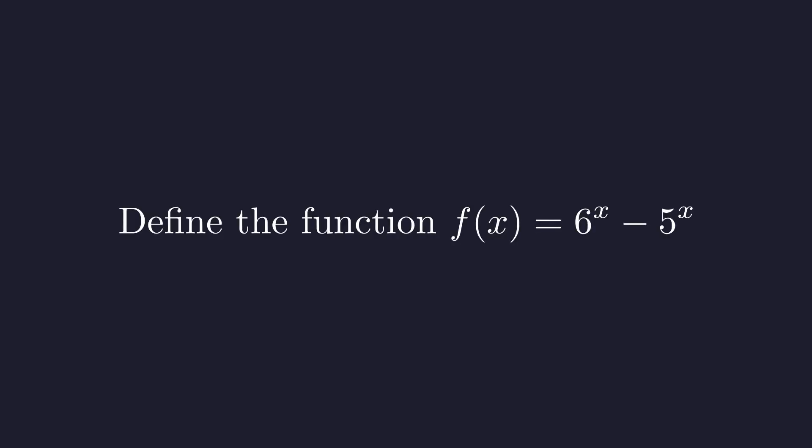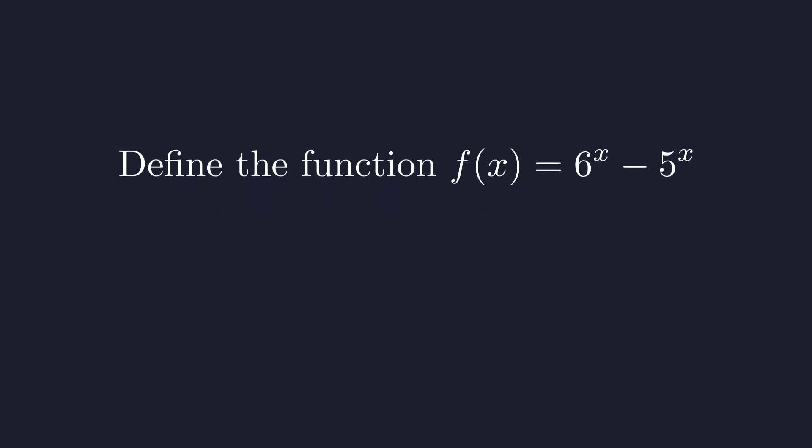To tackle this systematically, let's think of the left side of our equation as a function. We'll call it f of x, where f of x equals 6 to the x minus 5 to the x. Now to understand this function completely, we need to examine how it behaves in different regions. We'll split our investigation into three cases based on the value of x.